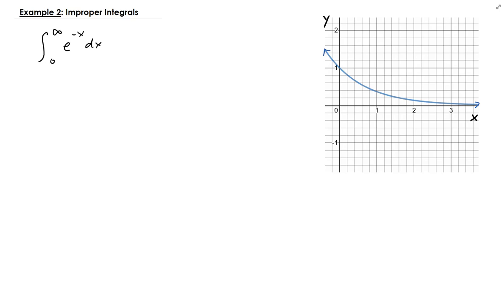In this lesson we're going to solve this improper integral. We're given the integral of e to the minus x dx going from zero to infinity. So this is an improper integral; the upper bound is going to infinity. The first thing we have to do is rewrite this in terms of a limit.